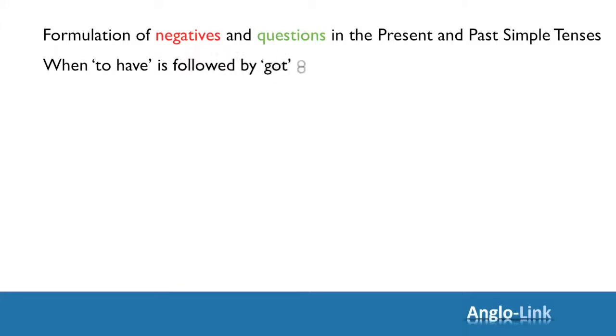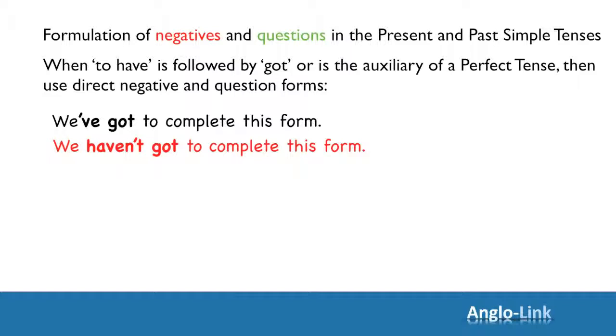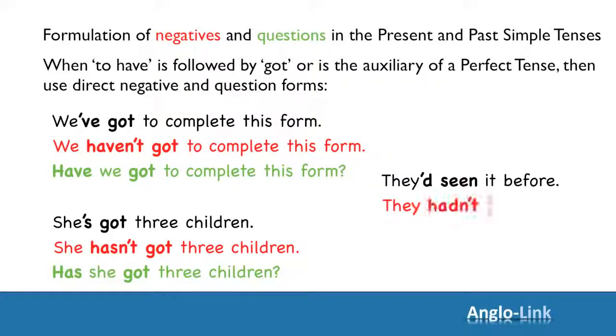However, when TO HAVE is followed by got or is the auxiliary of a perfect tense, then use direct negative and question forms. For example, we've got to complete this form. Negative: We haven't got to complete this form. Another example. She's got three children. Negative: She hasn't got three children. Question: Has she got three children? And now an example in the perfect tense. They'd seen it before. They hadn't seen it before. Had they seen it before?